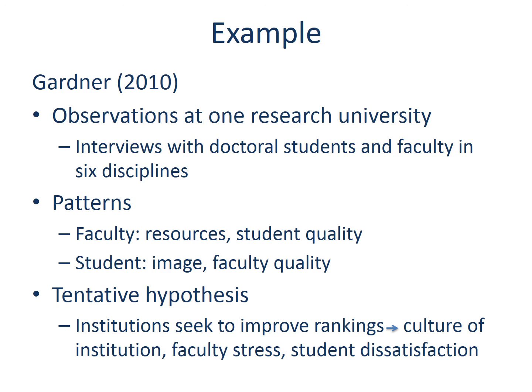Meanwhile, Gardner (2010) investigates a similar topic — the influence of rankings on higher education institutions — from a qualitative approach. This study is based on observations at one research university, with data collected from interviews with doctoral students and faculty in six disciplines. The researcher identified patterns from the data: rankings make faculty focus on and feel dissatisfied with the lack of resources and student quality when they feel pressure to improve their ranking position, while students feel their departments care more about image and faculty quality than student support and experiences. The tentative hypothesis is that when institutions seek to improve rankings, institutional culture changes, faculty feel stress, and students are unsatisfied with their experiences.